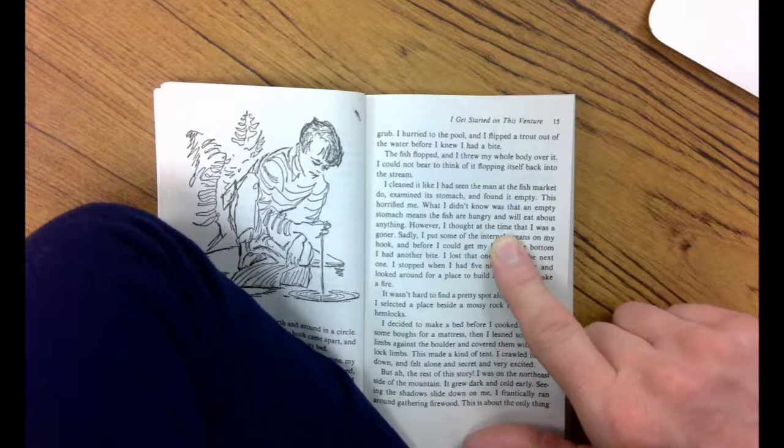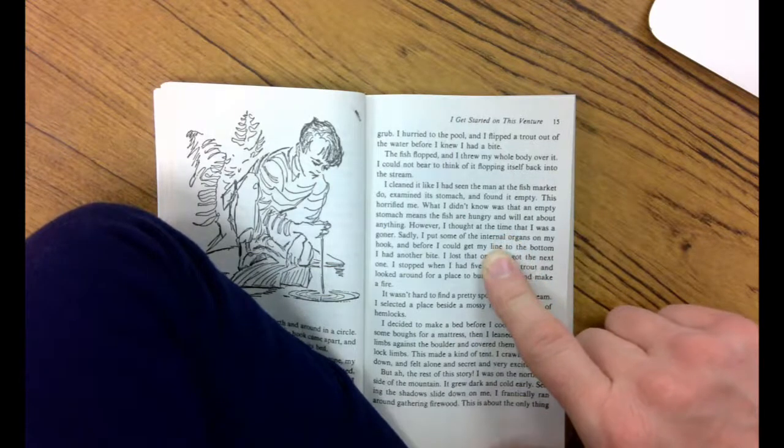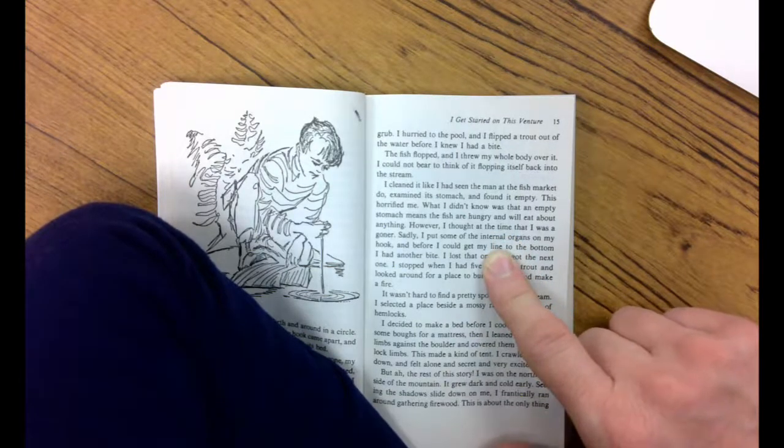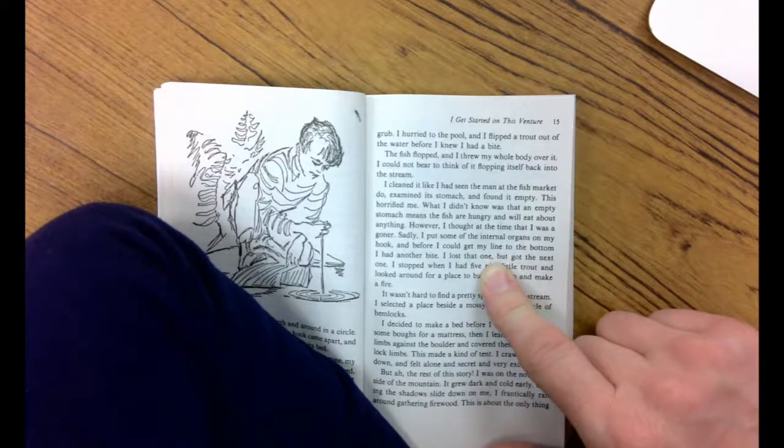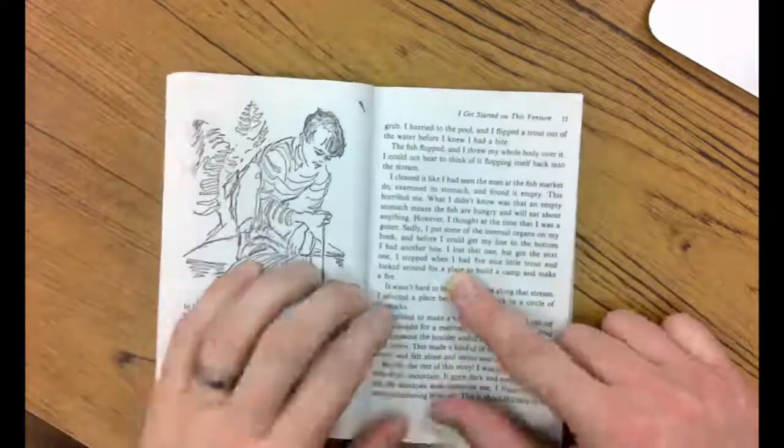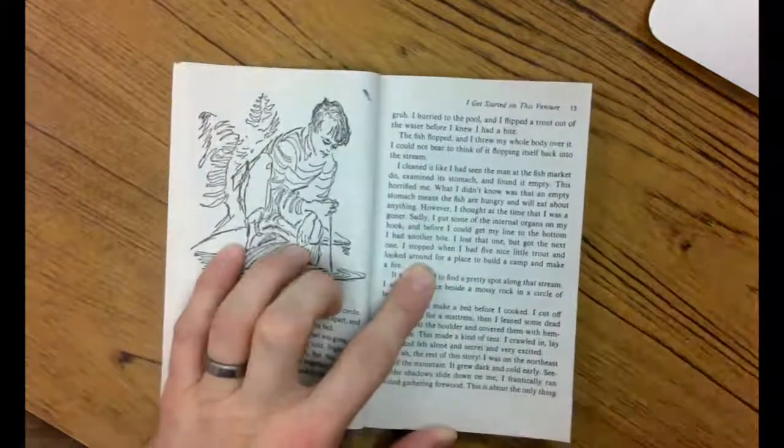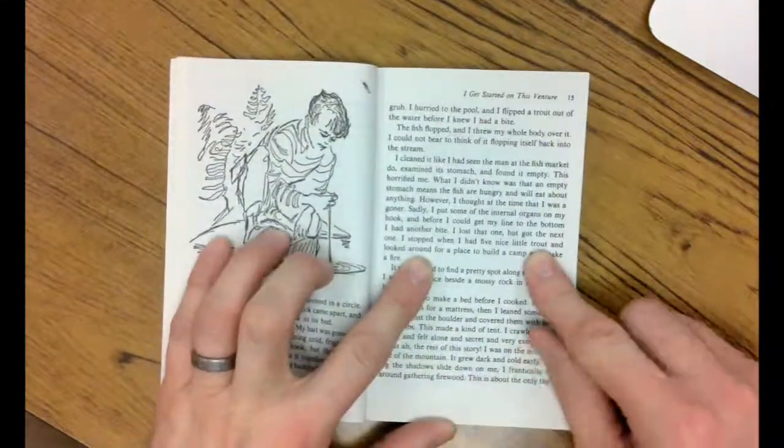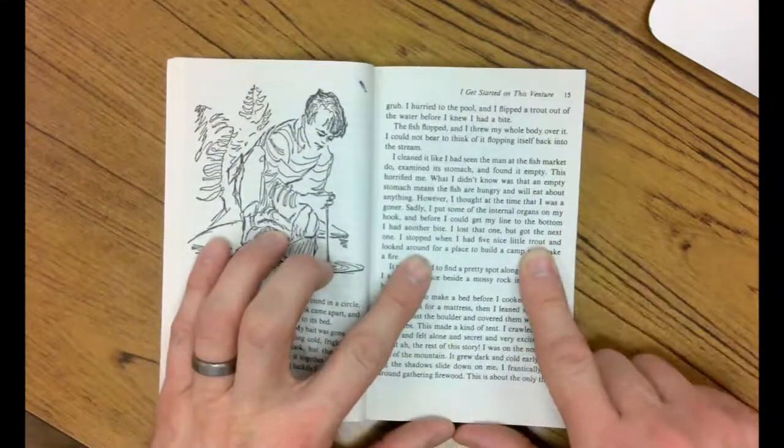What I didn't know was that an empty stomach means the fish are hungry and will eat about anything. However, I thought at the time that I was a goner. Sadly, I put some of the internal organs on my hook, and before I could get my line to the bottom, I had another bite. I lost that one, but got the next one. I stopped when I had five nice little trout. Now, trout are delicious to eat, especially brook trout or stream trout like these are.